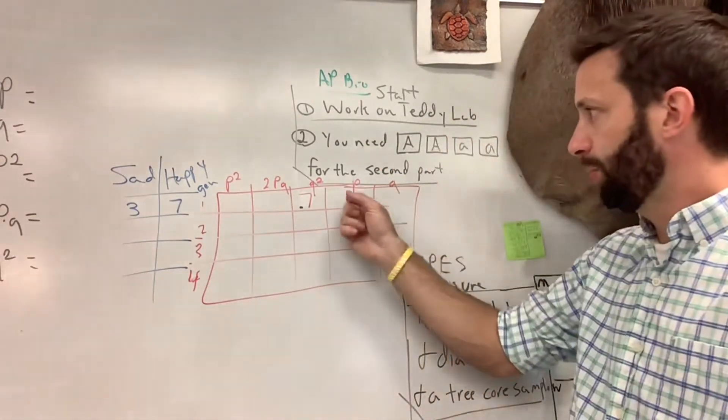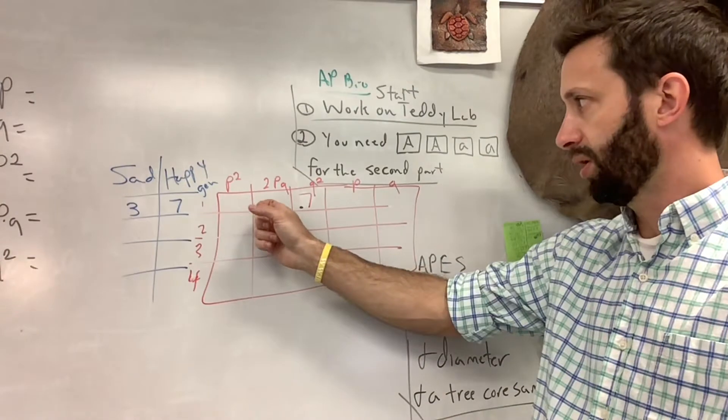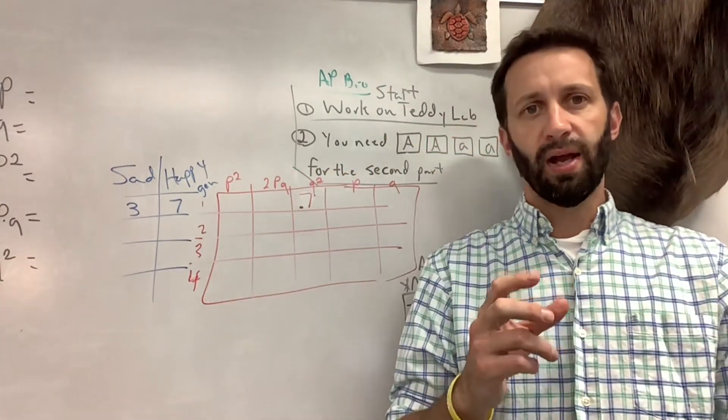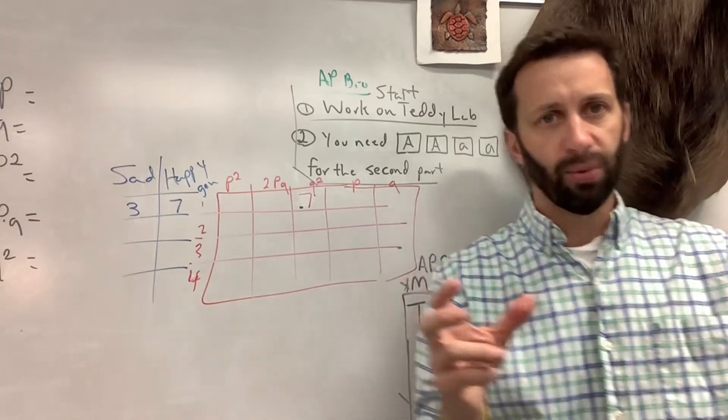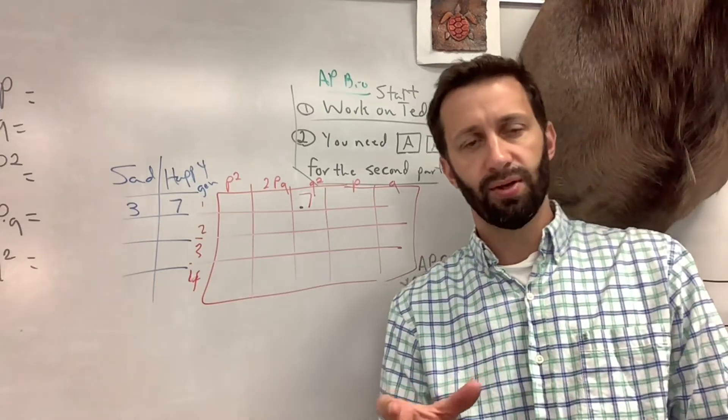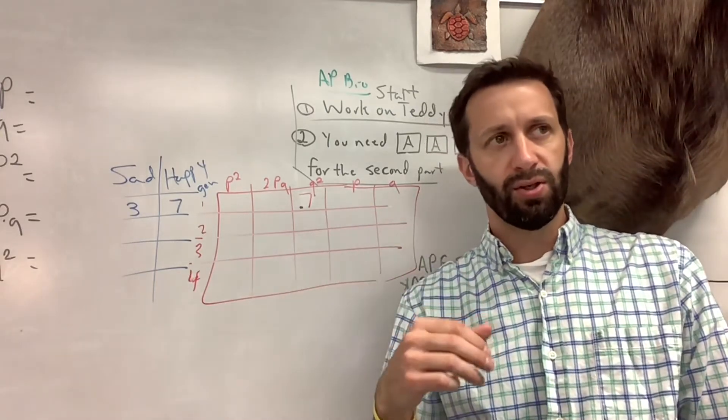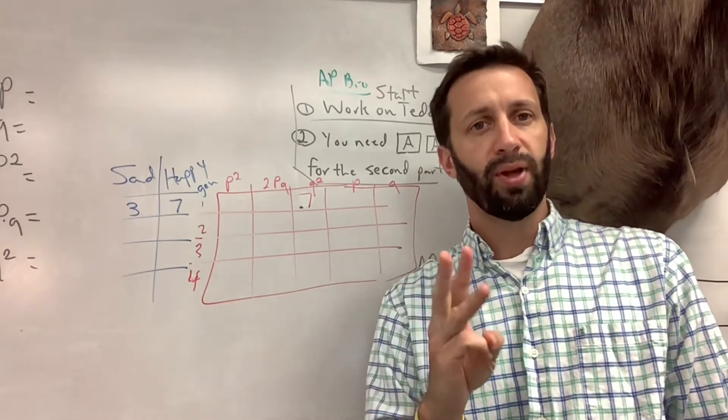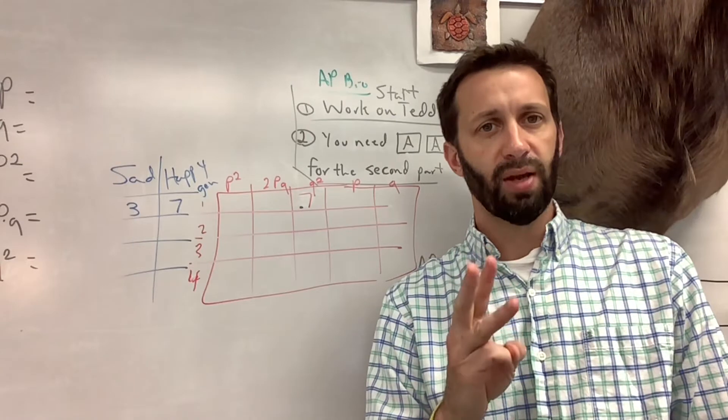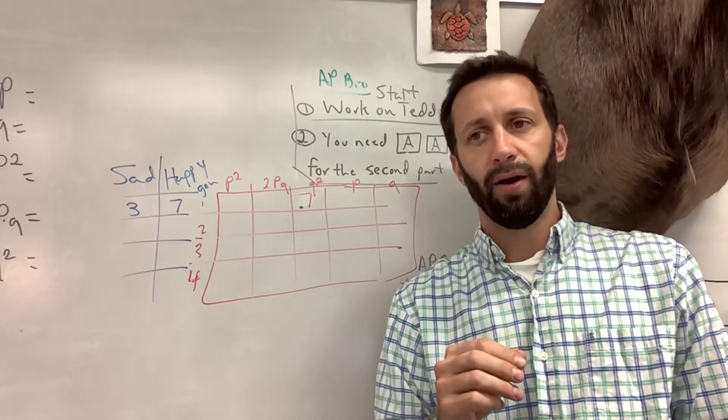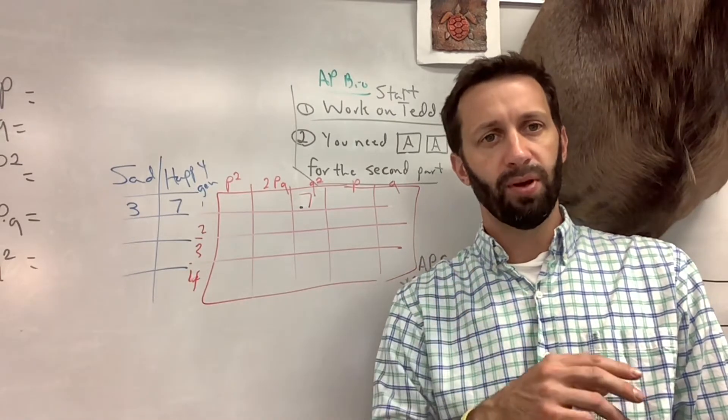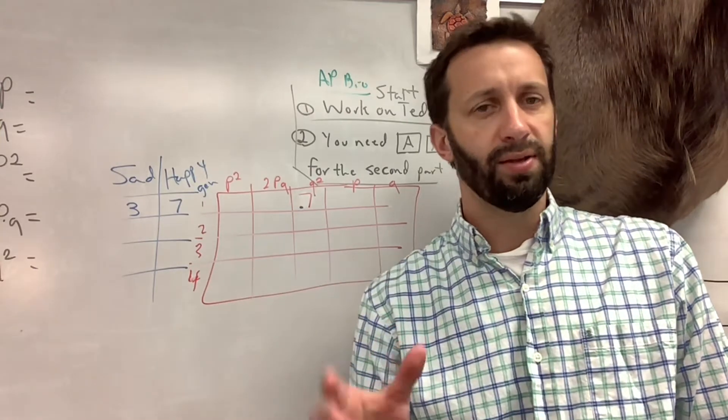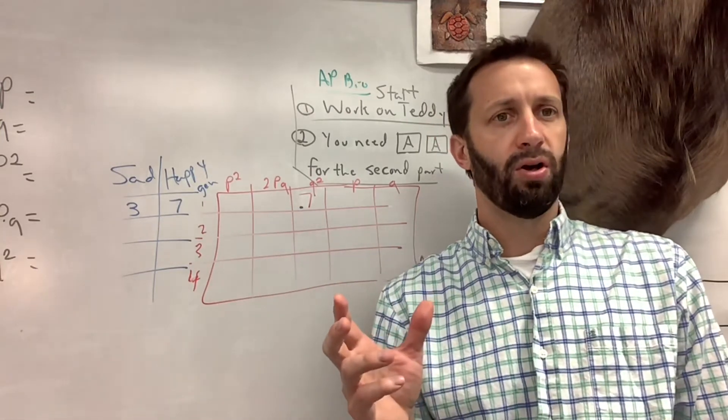So the way that we're going to do this lab today is we're going to start out with seven happy bears and three sad bears. Every generation, you're going to eat three bears - you're going to try to eat three happy bears. If there's happy bears, you're going to eat three. If there's not, you'll eat as many happy bears as you can and make up the difference in sad bears.